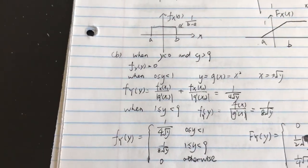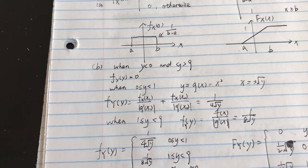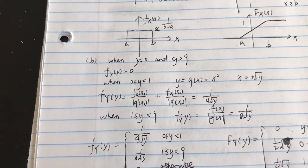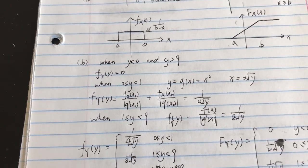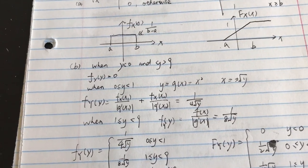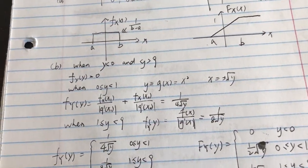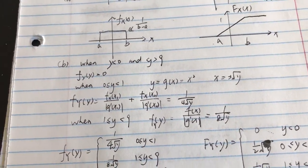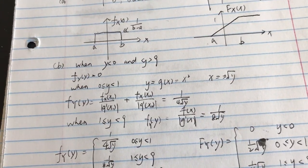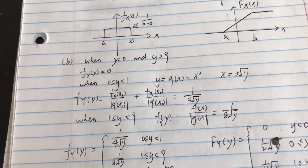When y is more than or equal to 1 and less than 9, then f_y also uses this formula, and it equals 1 divided by 8 multiplied by the square root of y.